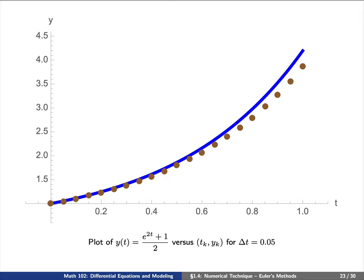On this slide here, we've actually decreased the step size. Instead of delta t being 0.1, we've placed it in half so that delta t is equal to 0.05.